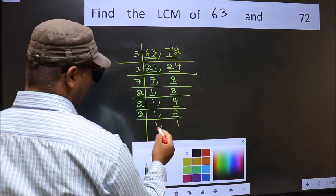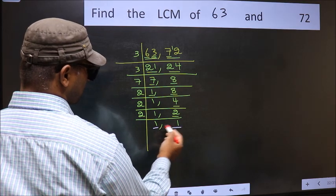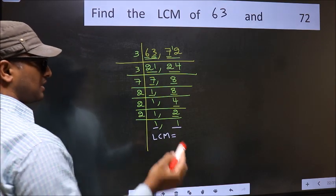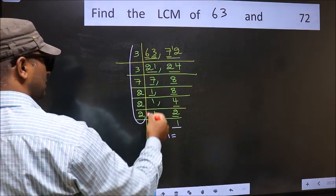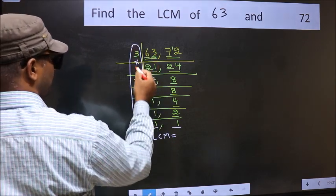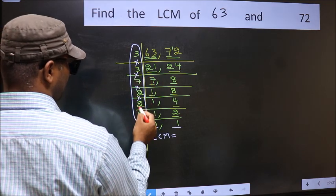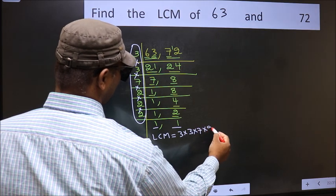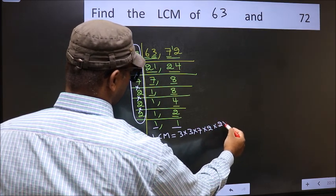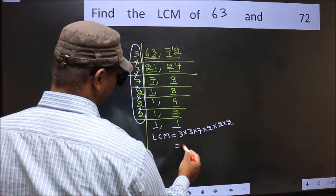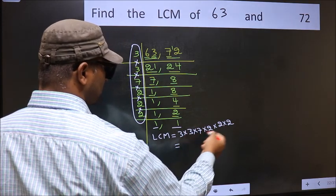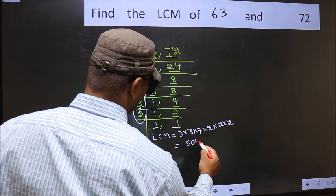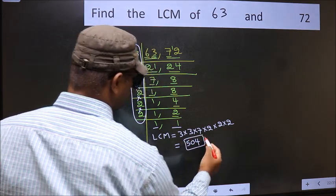We got 1 in both places. So our LCM is the product of these numbers: 3 times 3 times 3 times 7 times 2 times 2 times 2. When we multiply these numbers, we get 504. That is our LCM.